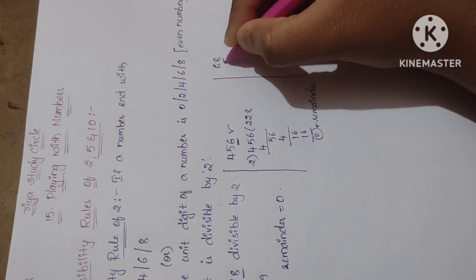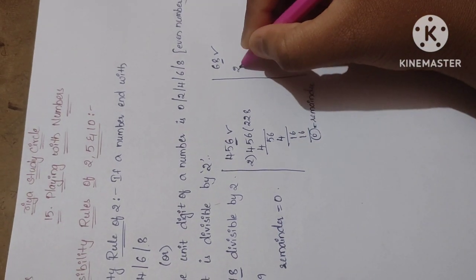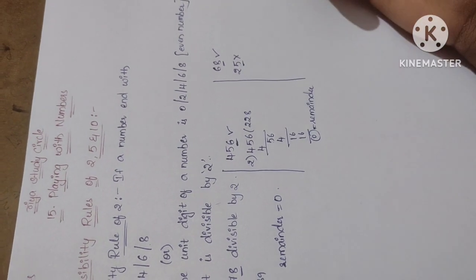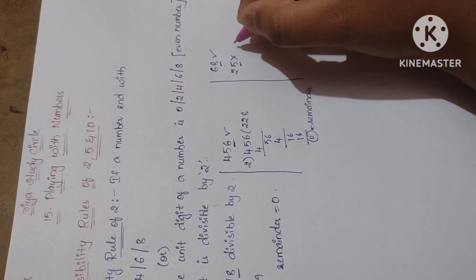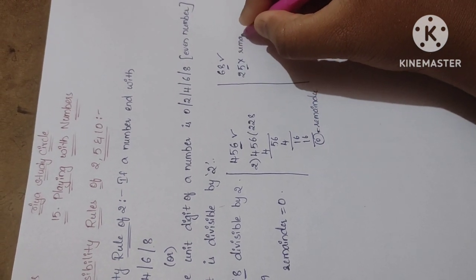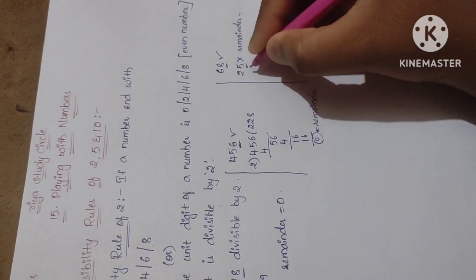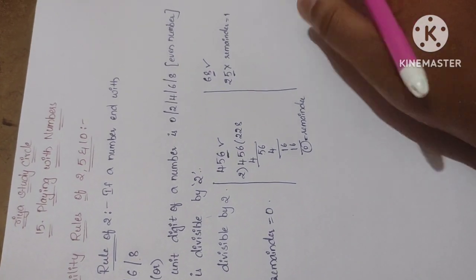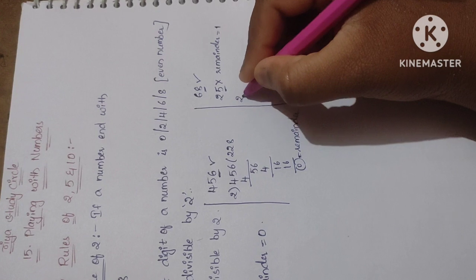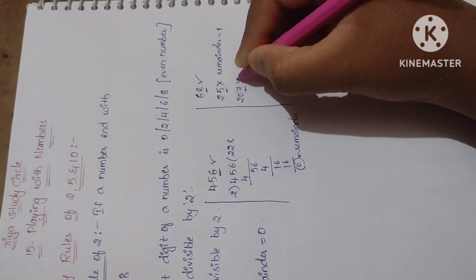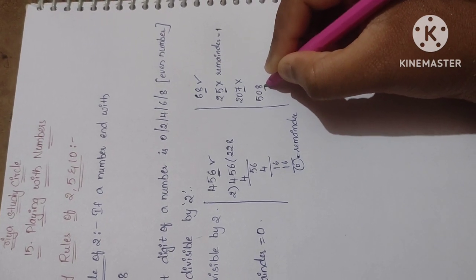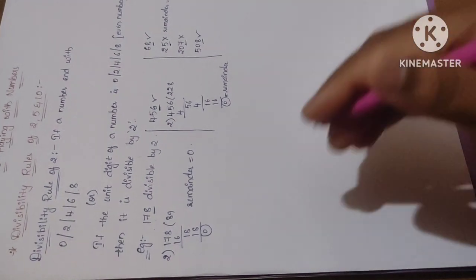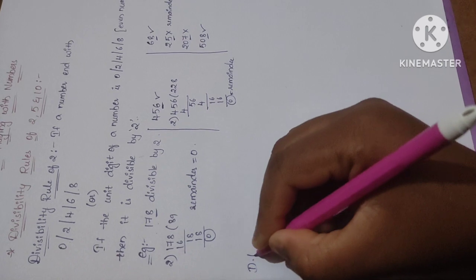Instead of doing the full division, by simply seeing the unit digit you can say whether the number is divisible by 2. For example: 68 — unit digit is 8, so yes, divisible by 2. 25 — unit digit is 5, not divisible by 2; dividing gives remainder 1. 7 — not divisible by 2, unit digit is 7. 58 — divisible by 2, unit digit is 8.